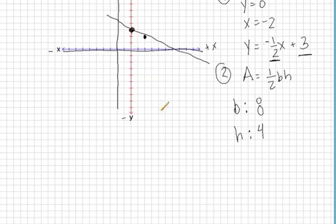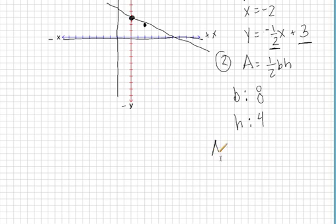We're going to go ahead and plug these into our formula. So the area is equal to 1 half, b is 8, and h is 4.